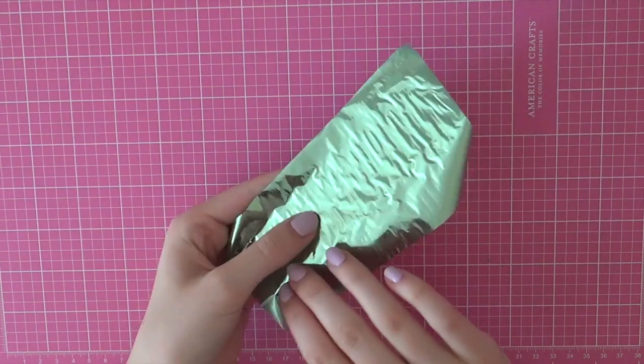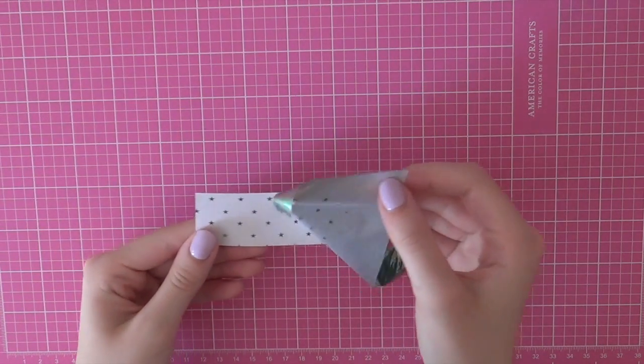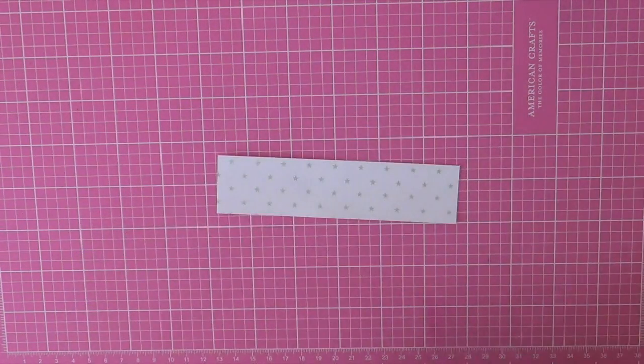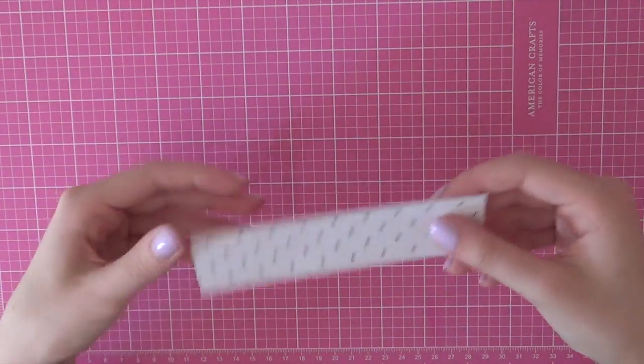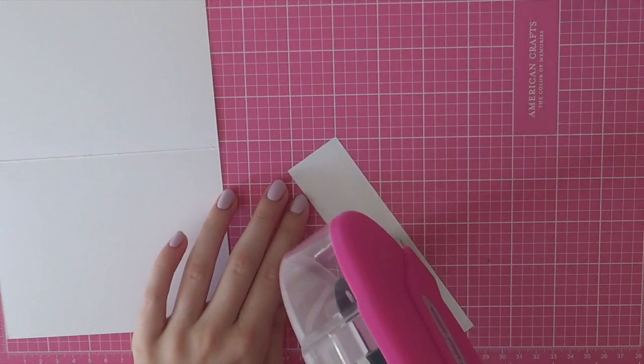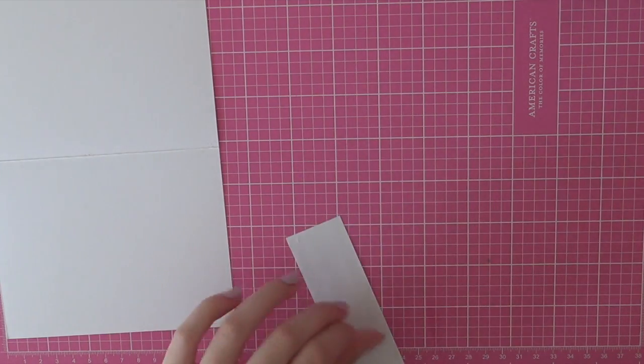Of course, you could also use a mink tool from Heidi Swapp. So after running the paper through my laminator, I am going to peel off that foil and then you will end up with a really pretty and foiled starry background.